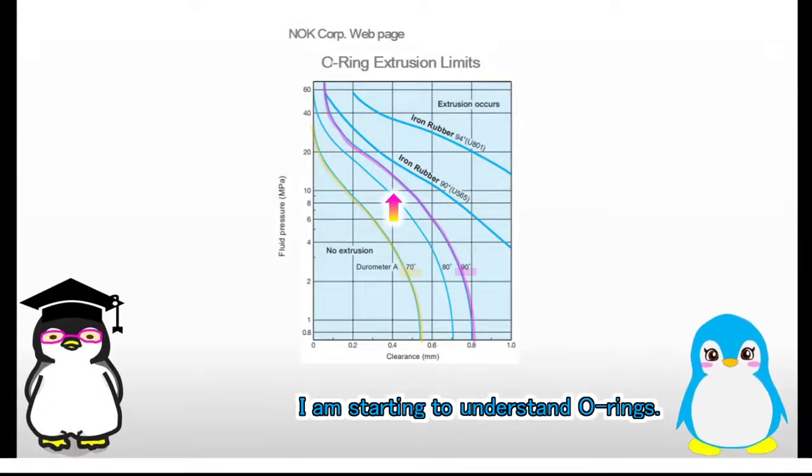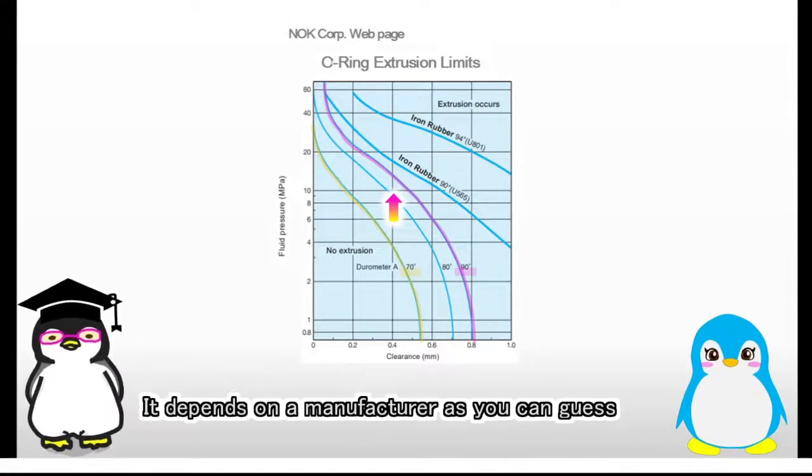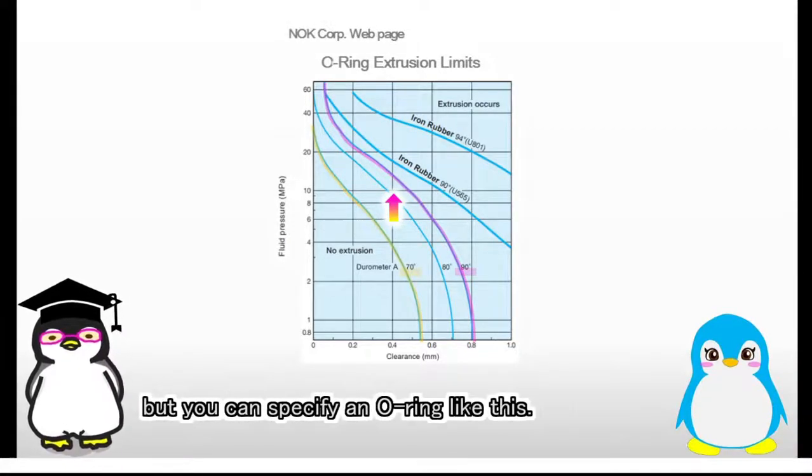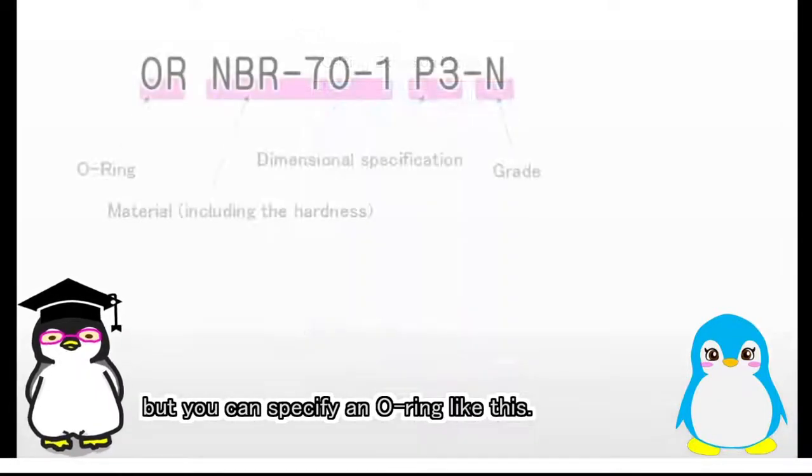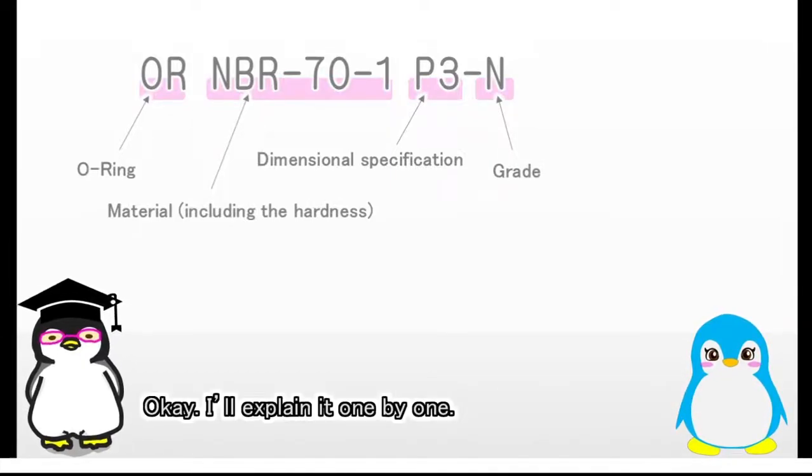I am starting to understand O-rings. How can I specify an O-ring I need when I order it? It depends on a manufacturer as you can guess, but you can specify an O-ring like this. That's more complicated than I expected. Okay. I'll explain it one by one.